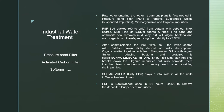In this episode we'll cover industrial water treatment, mainly pressure sand filter, activated carbon filter, and softener. Raw water entering the water treatment plant is first treated in the pressure sand filter to remove suspended impurities, microorganisms, and organic impurities.